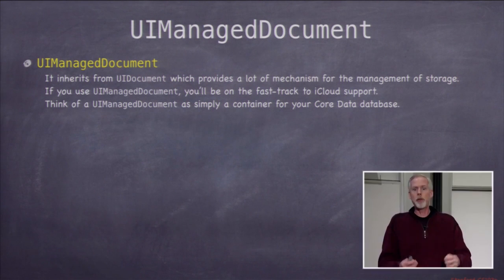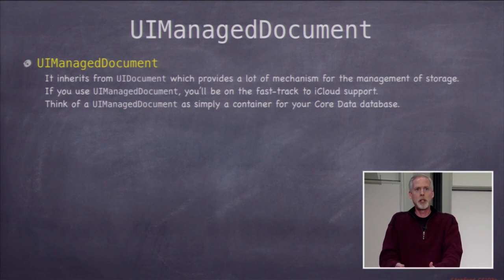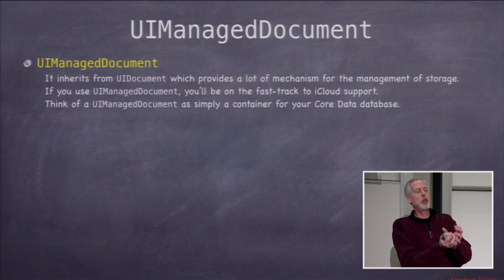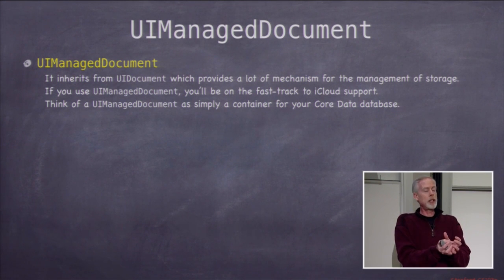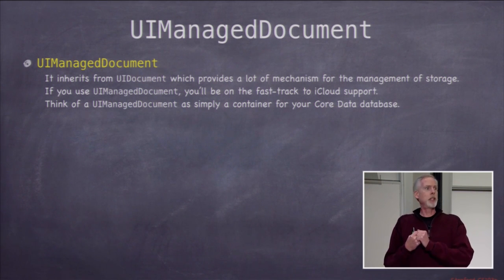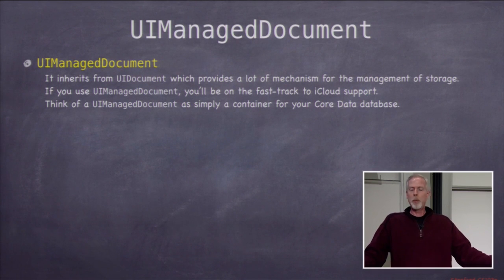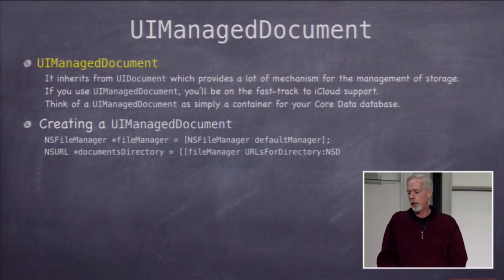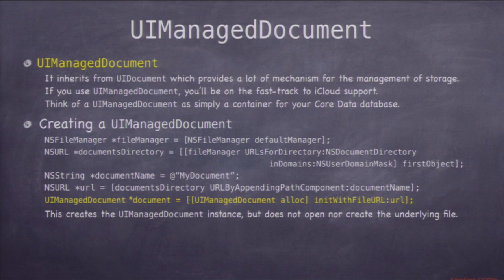UIManagedDocument inherits from UIDocument. UIDocument is a bunch of mechanism for managing some storage. UIManagedDocument puts a Core Data database in that storage. You can think of UIManagedDocument as just a thing that contains your Core Data database. All you ever really do is open or create a UIManagedDocument, grab its managed object context, and then use it to do your database work. That's it.